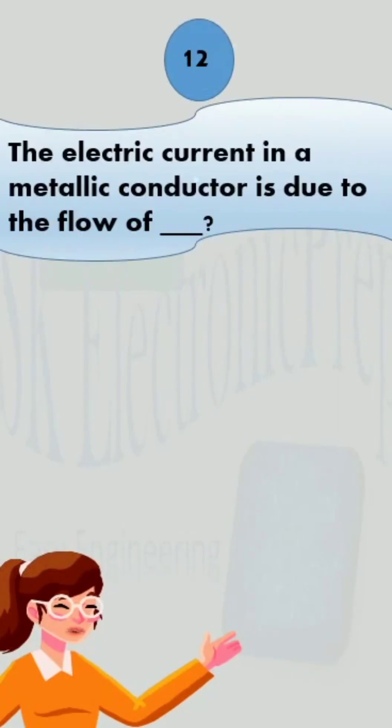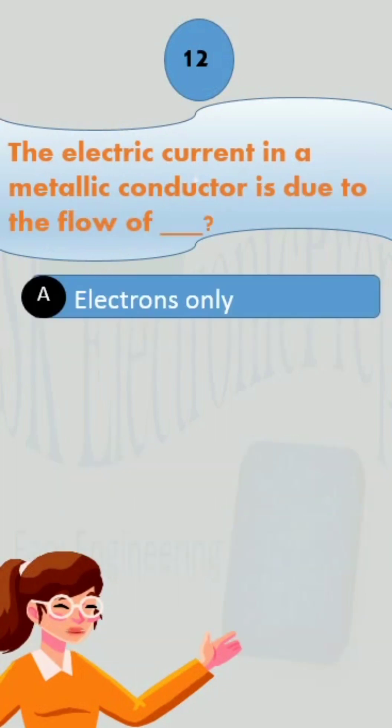Question number 12. The electric current in a metallic conductor is due to the flow of option A, electrons only,